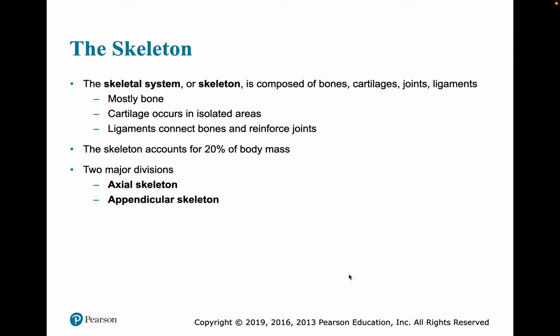The skeleton, or the skeletal system — we talked about bones in general last week, bone tissue. Now we're going to talk about the specific bones in two regions, two divisions of our skeleton: the axial skeleton and the appendicular skeleton. Your skeletal system is mostly bone. There is cartilage in some areas. We've talked about articular cartilage before, and we'll talk more about that when we talk about joints and ligaments that connect the bones and reinforce the joint.